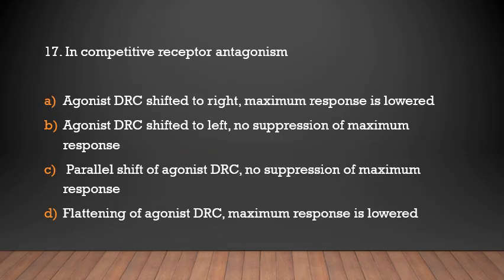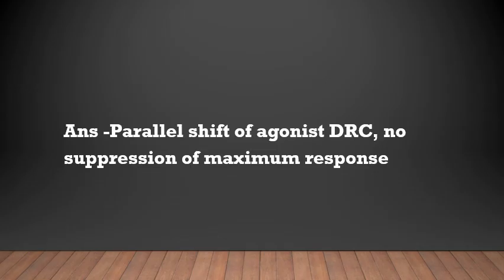In competitive receptor antagonism: agonist DRC shifted to right, maximum response is lowered; agonist DRC shifted to left, no suppression of maximum response; parallel shift of agonist DRC, no suppression of maximum response; or flattening of agonist DRC, maximum response is lowered. The answer is parallel shift of agonist DRC, no suppression of maximum response.